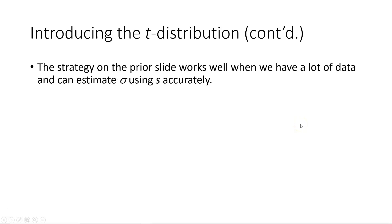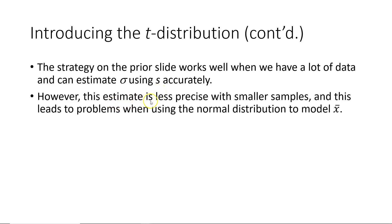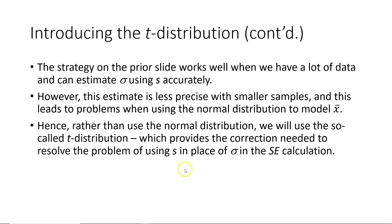That strategy works well when we have a lot of data and can estimate the population standard deviation accurately using a sample standard deviation. However, this estimate is less precise with smaller samples, which leads to problems when using the normal distribution to model the sampling distribution of sample means. Therefore, rather than using a normal distribution, we're going to use the t-distribution, which provides the correction needed to resolve the problem of using sample standard deviations in place of population standard deviations in the standard error calculation.